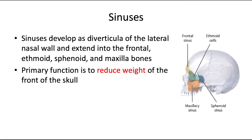Sinuses develop as diverticula, or pouches, of the lateral nasal wall, and they extend into the frontal, ethmoid, sphenoid, and maxilla bones, eventually creating sinuses of those same four names. The primary function of these air spaces is to reduce the weight of the front of the skull.